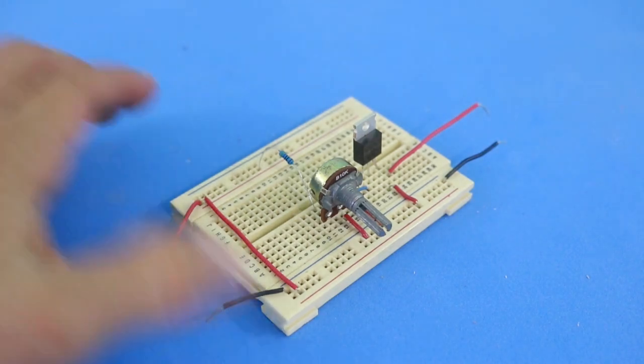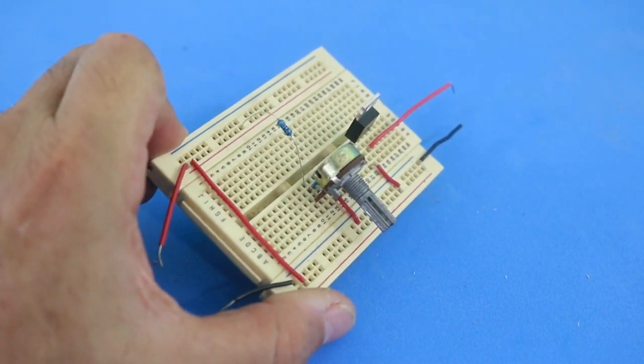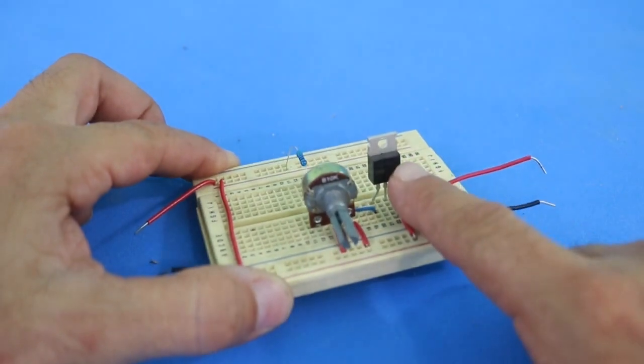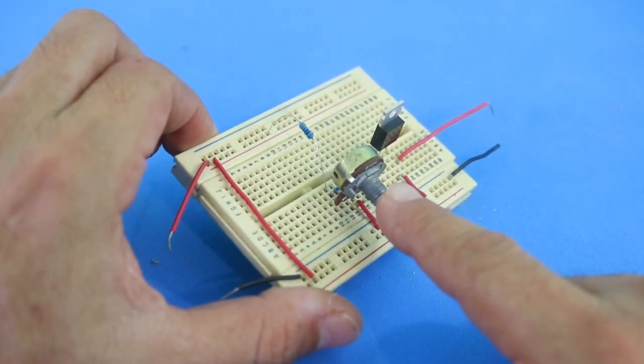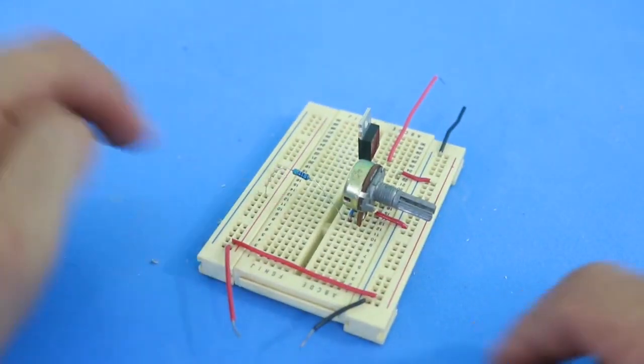In this video I will show you how to make the simplest lithium ion battery charger. As you can see, you only need three components: a MOSFET transistor, potentiometer, and a resistor.